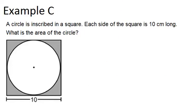In example C, it says a circle is inscribed in a square. Each side of the square is 10 centimeters long. What is the area of the circle? Okay, so we know that the side of the square is 10. So that means actually that the diameter of the circle is 10, because that's the distance all the way across, and we're working with centimeters.